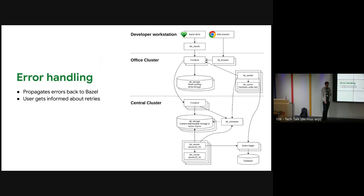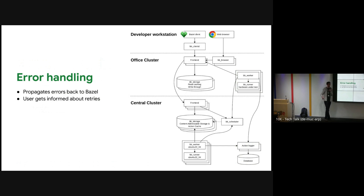For error handling, BuildBarn pushes all errors back to the Bazel client, and there's a reason behind this. If a worker fails and a long-running test restarts, you don't want to discover that your test has been running for 20 minutes when you expected it to finish after 12. Instead, the error is propagated back to Bazel saying something failed, and you can decide if you want to retry or not.